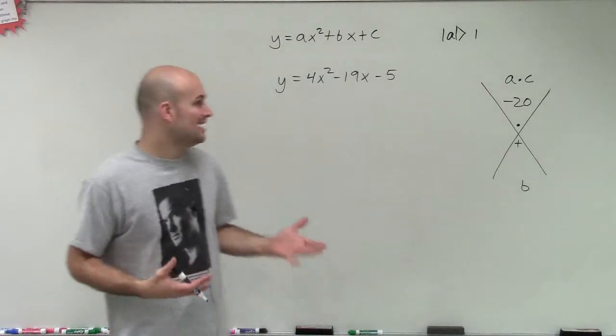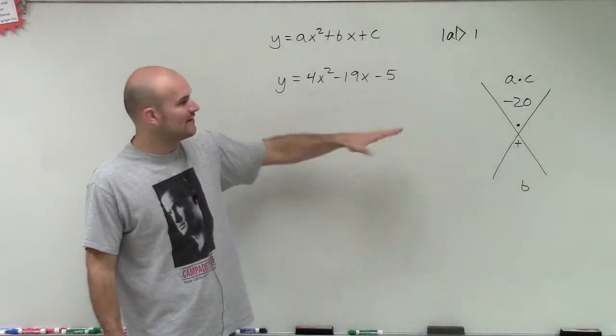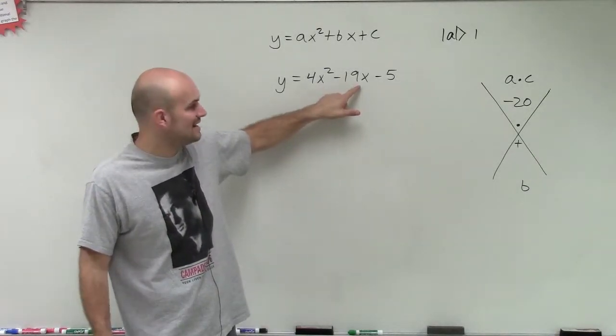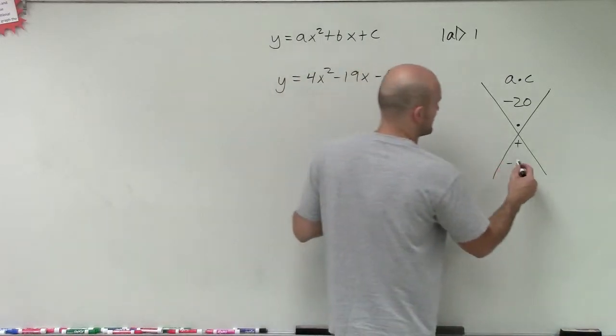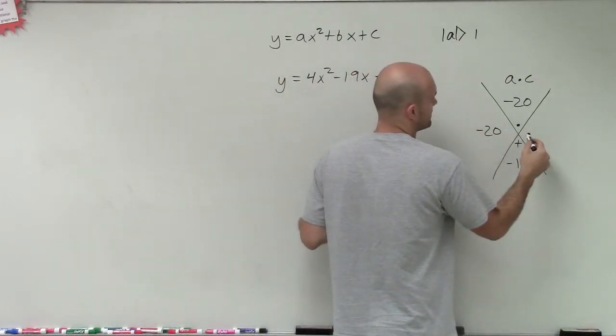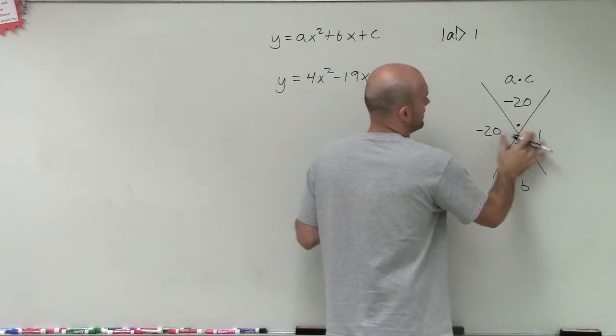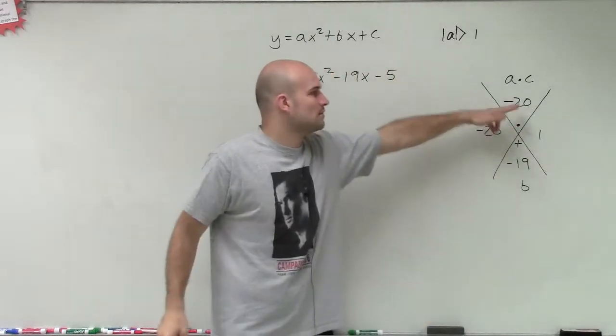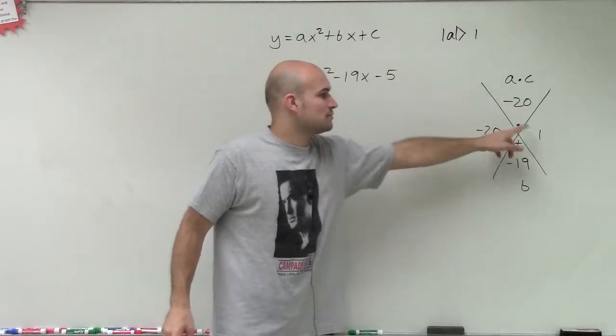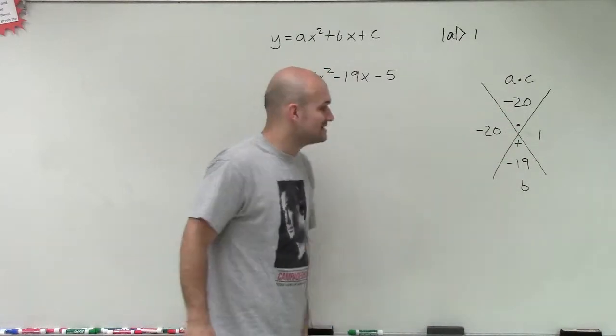Hopefully we've had some practice. The only two factors that are going to add up to give me negative 19 are going to be negative 20 and 1. Let's write that down. Negative 20 times 1 gives us negative 20, and negative 20 plus 1 adds up to give us negative 19.